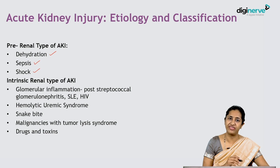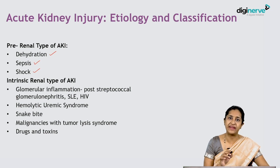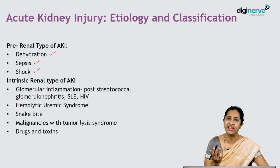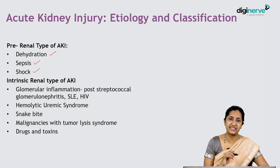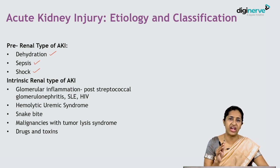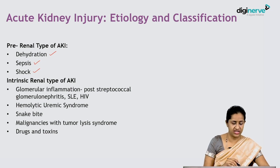Hemolytic uremic syndrome produces intrinsic AKI. Snake bites — especially viper bites — can produce acute kidney injury, with children requiring dialysis until renal function recovers. Malignancies with tumor lysis syndrome, especially with high tumor burden, cause AKI when chemotherapy is given and the massive lysis of tumor cells results in acute kidney injury.